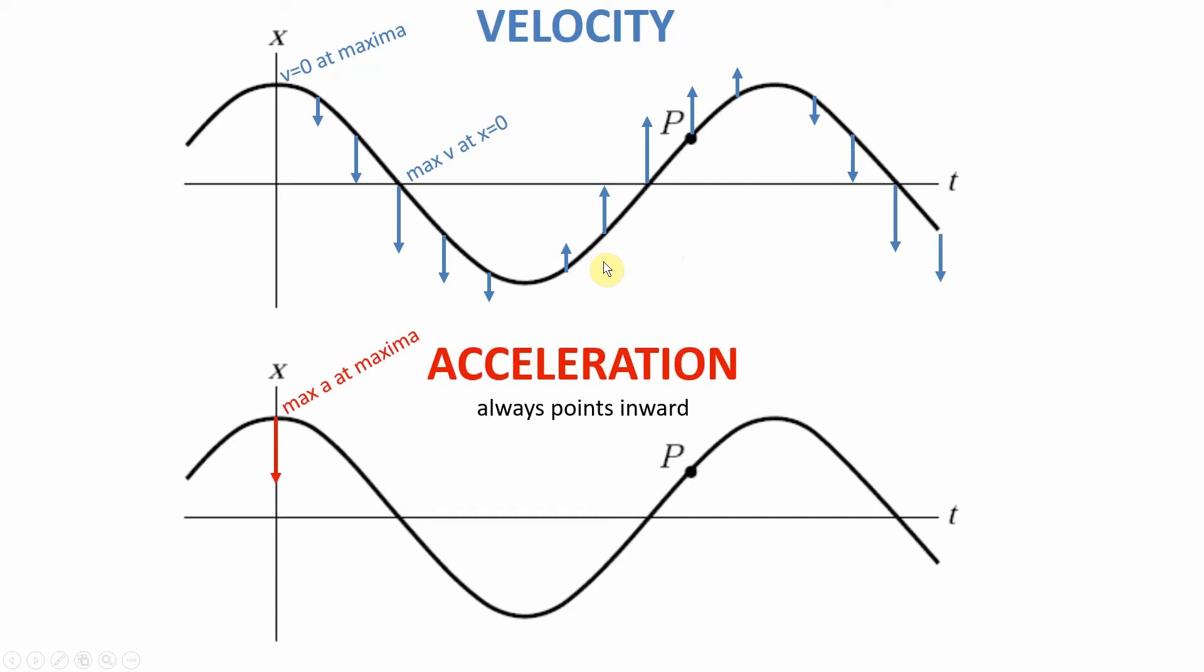The acceleration is a little bit different. If I go back to the swing set, the further you are away from the equilibrium point, the more force and the more acceleration there's going to be. So your maximum acceleration is at the maximum. So I'm going to have a lot of force wanting to pull me back towards the equilibrium. As I get closer to my equilibrium point, my acceleration gets smaller and smaller until it's zero at x equals zero.